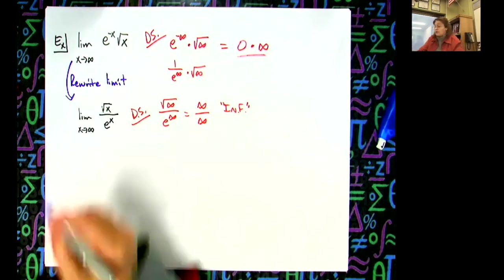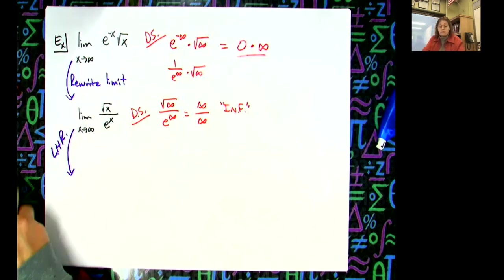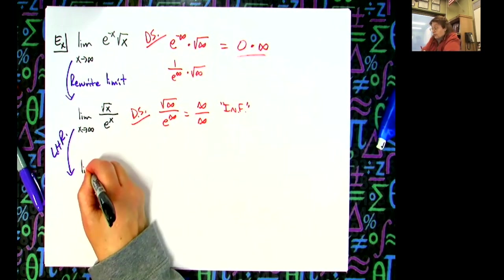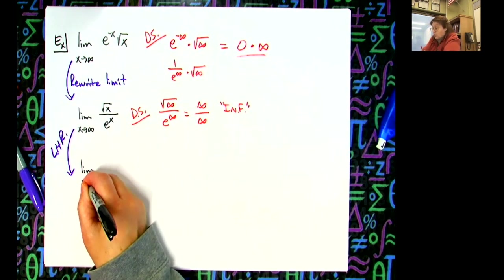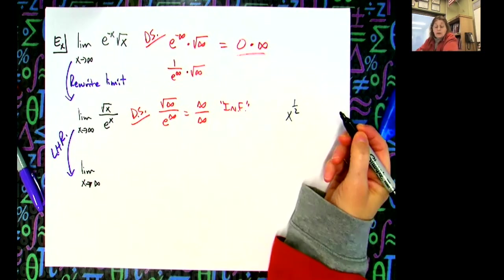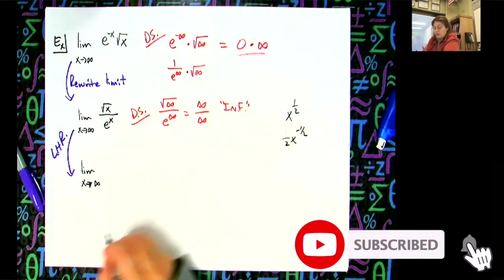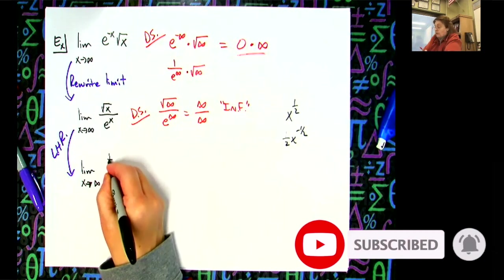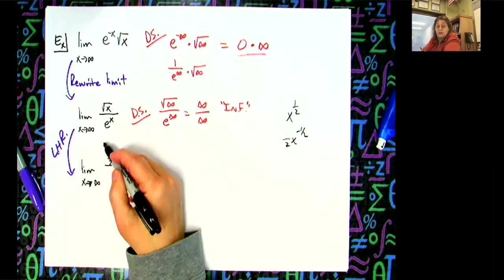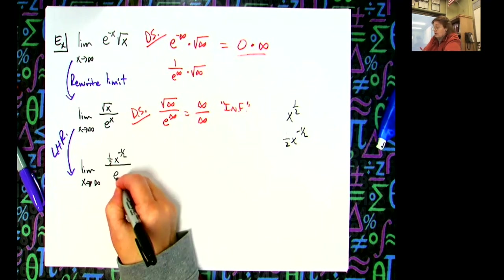So we rewrote the limit first, and now I'm going to apply L'Hôpital's rule. The limit as x approaches infinity — the top is x to the one-half, so its derivative is one-half x to the negative one-half. On the bottom, e to the x — using the chain rule, e to the u times u prime, and the derivative of x is just one — so I get e to the x.